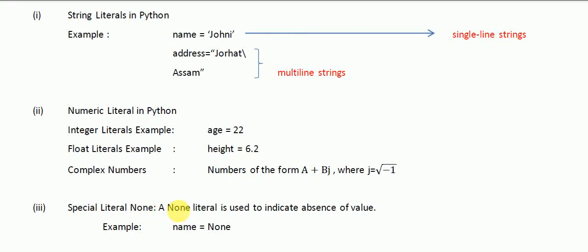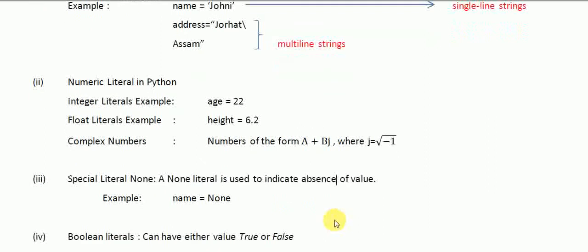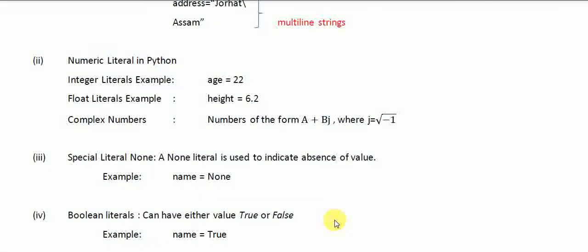Next is the None literal. A None literal is used to indicate the absence of a value. If you want to declare a variable but don't want to assign any value to it, you can use None.